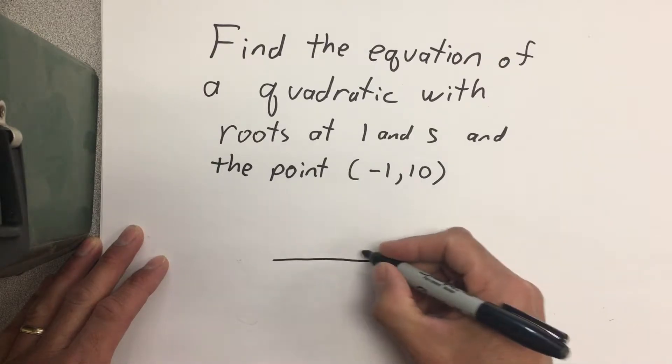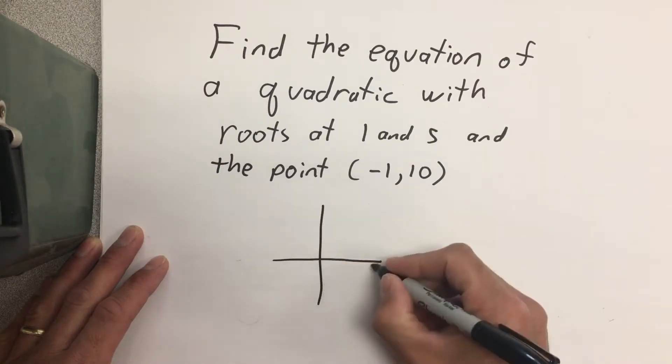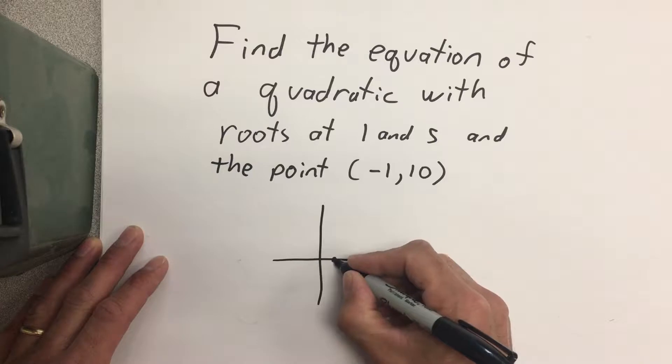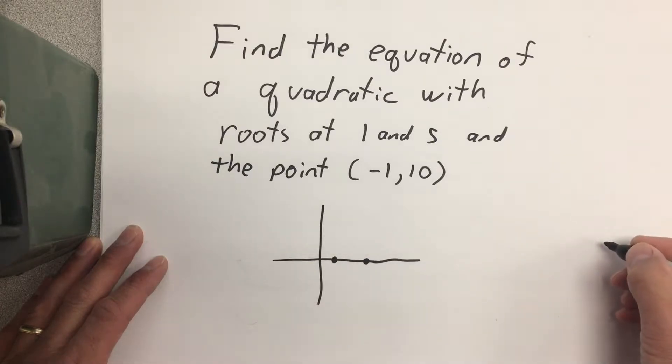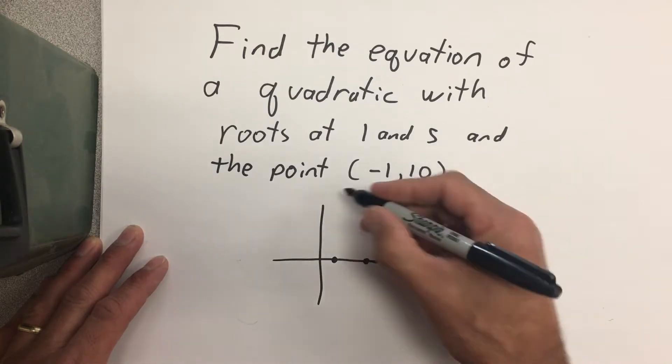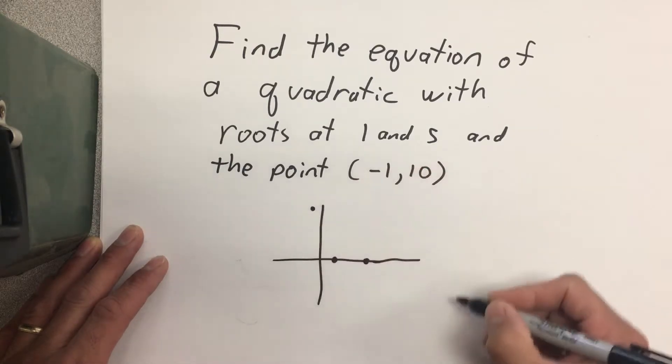What this means is that we're finding the equation of a quadratic with roots—that means it touches the x-axis when x equals 1 and x equals 5—and the point (-1, 10) is also on the quadratic.